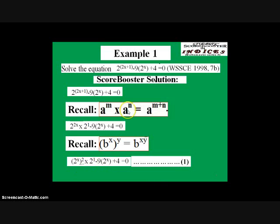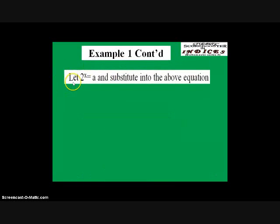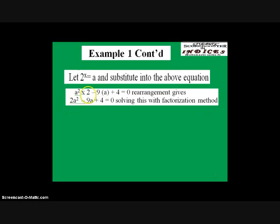We have now succeeded in putting the question in the form of a quadratic equation. Most of the time, we don't want to work with 2 raised to power x directly. We can use a simple letter to represent it. So let 2 raised to power x equal a. After that, I substitute a into equation 1. Wherever I see 2 raised to power x, I fix in a. If we further rearrange, we get 2a squared minus 9a plus 4 equals 0.